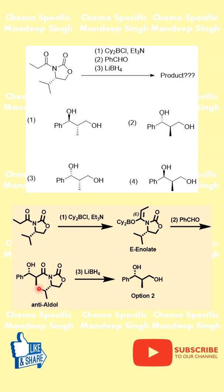In the next step, the E-enolate reacts with benzaldehyde to give the anti-aldol product. The stereochemistry here is dictated by the isopropyl group going behind the plane, which is present on the Evans auxiliary. The methyl group approaches from the top face, and since the relationship between the alcohol and the methyl is anti, the OH is going behind the plane.